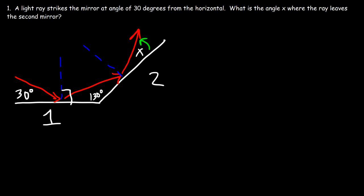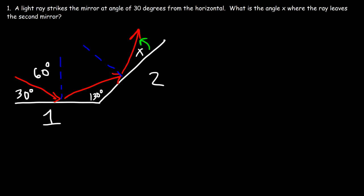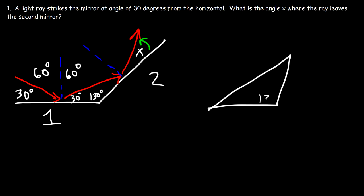Let's start by calculating the angle of incidence. The normal line makes a 90-degree angle with the surface, so these two angles add up to 90. So 90 minus 30 is 60 — that's the angle of incidence. Based on the law of reflection, the angle of incidence equals the angle of reflection, so the angle of reflection for the first mirror is also 60°, which means this angle here is 30°.